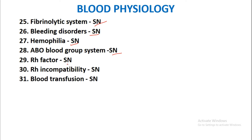ABO blood group system as a short note, Rh factor as a short note, Rh incompatibility as a short note. Among these three, Rh incompatibility is the most important. Blood transfusion as a short note. These are all the most probable questions from blood physiology.